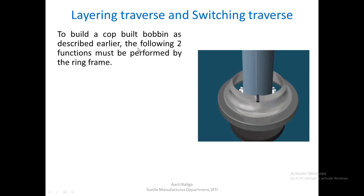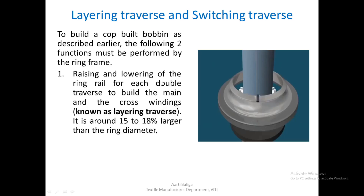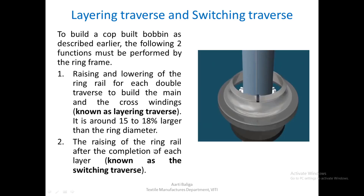To build a cop-build bobbin, the ring frame must perform two functions. First, the raising and lowering of the ring rail for each double traverse to build the main and cross windings — this is known as the layering traverse, and its stroke is around 15 to 18 percent larger than the ring diameter. Second, after completion of each double layer, the ring rail must raise a little for each subsequent traverse.